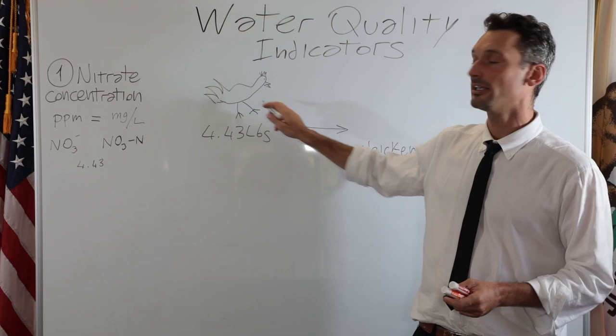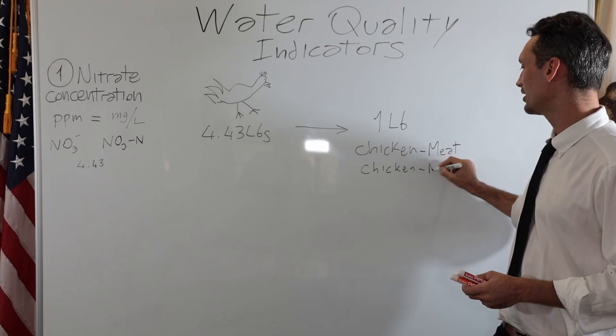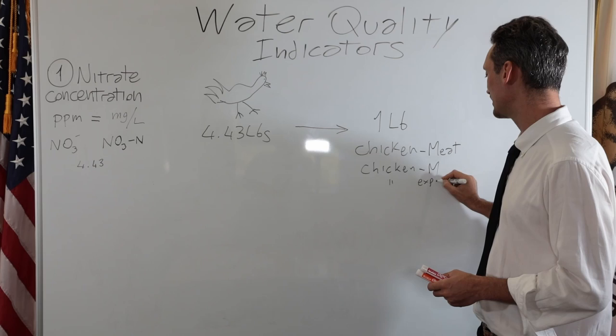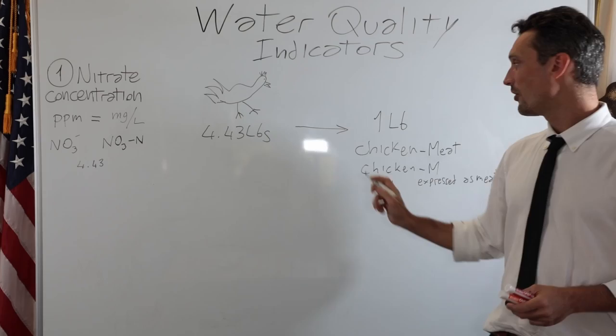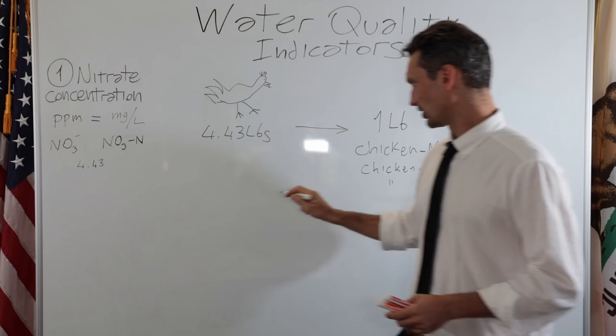And it turns out that every 4.43 pounds of chicken, you get one pound of chicken meat. Or you can call it chicken M, I guess. Chicken expressed as meat. So this is the conversion factor. Every 4.43 pounds of the whole chicken, you have the feathers, you have the bones, you have the head that you don't use, you make one pound of meat.